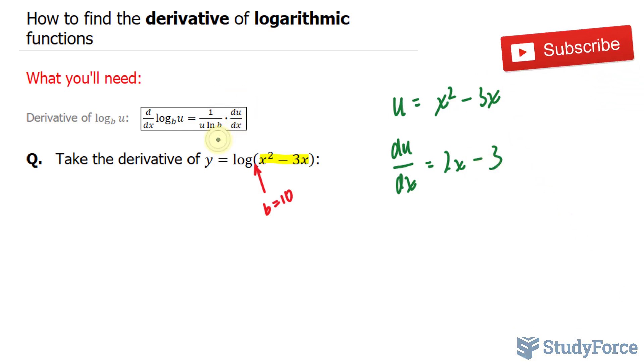Minus 3. So I found this part. Now all I have to do is set it up where I end up with y prime, the derivative of y, 1 over u, which I assigned as x squared minus 3x.